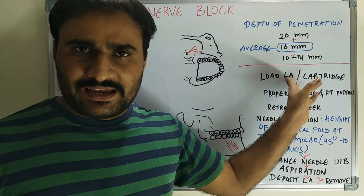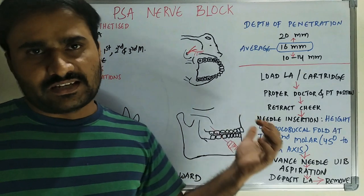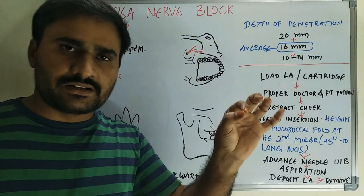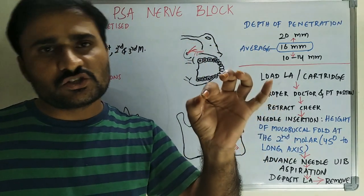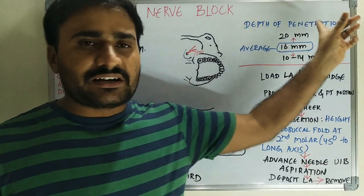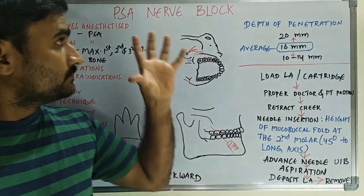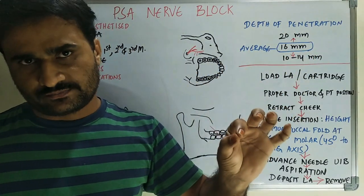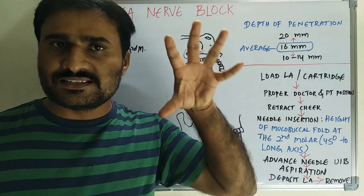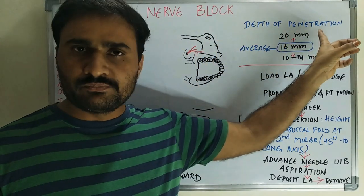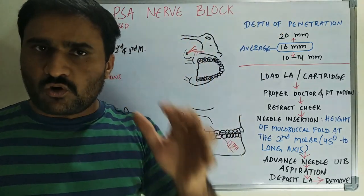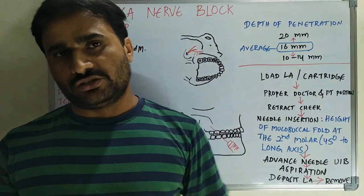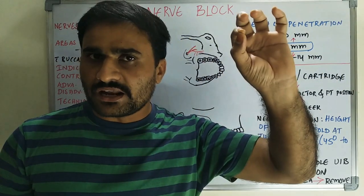For technique, you load the LA. You can use a short needle for the PSA nerve block — for other nerve blocks you use a long needle. The long needle is 32 mm and the short needle is 20 mm. Depth of penetration is a very important point: average depth should be 16 mm, not more. For patients with a large skull you can go up to 20 mm, and for small patients or children, 10 to 14 mm, because you are penetrating the needle into the pterygopalatine fossa.